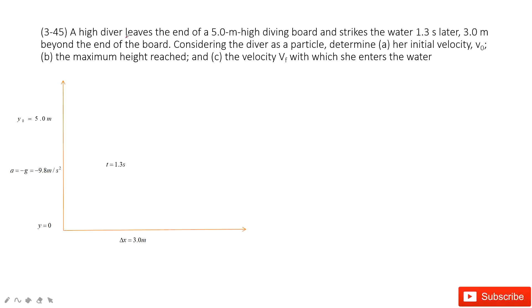So in this problem, there is a person that leaves the end of a five-meter-high diving board. You can see the initial position is 5 meters, and then it just hits the water 1.3 seconds later and 3 meters beyond the end of the board. So it must move this way and hits the water there.